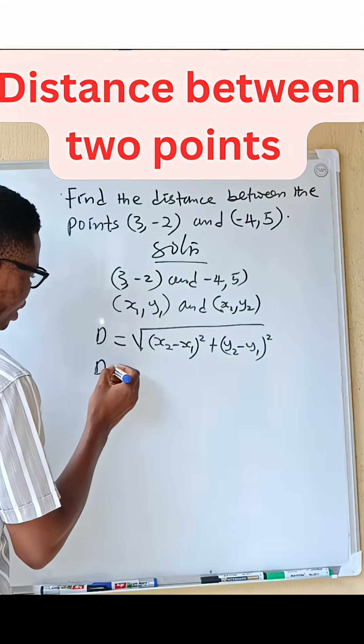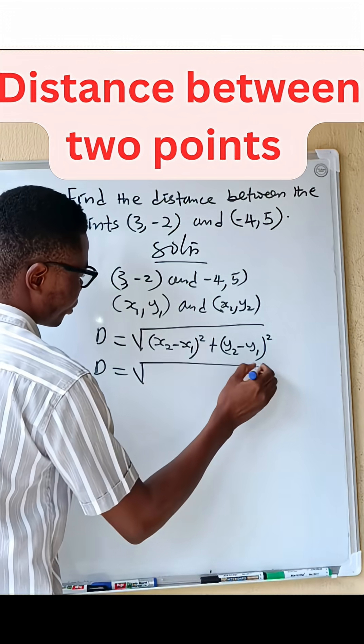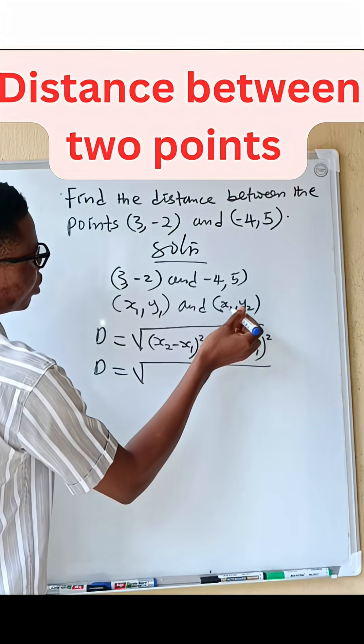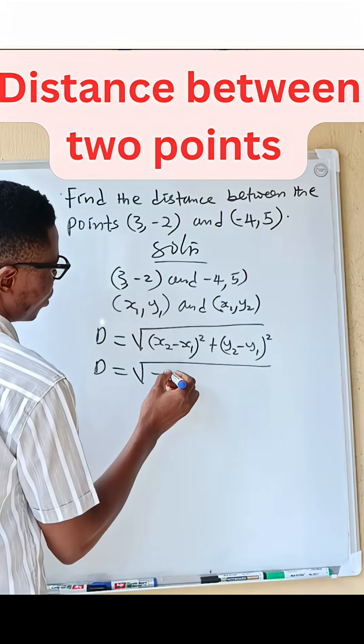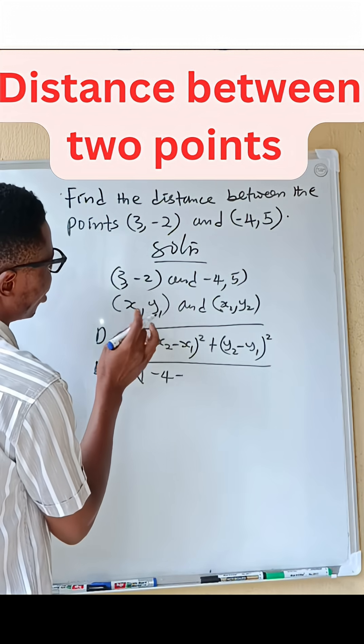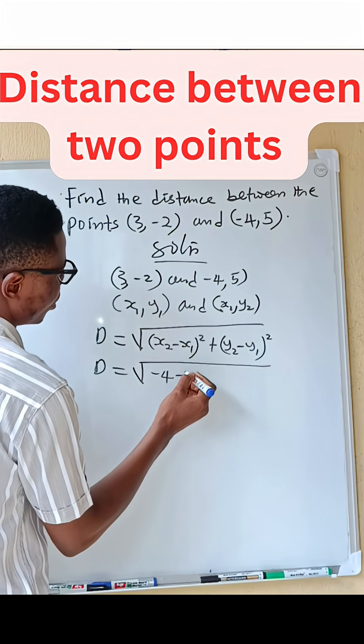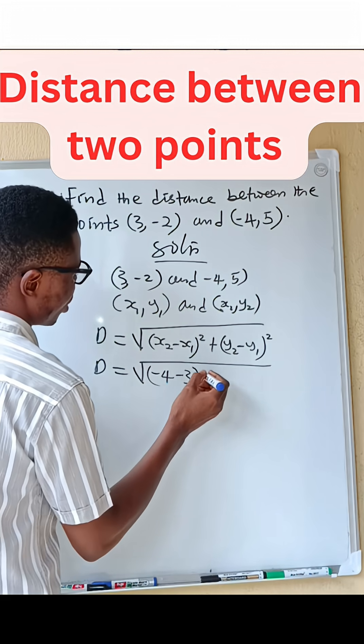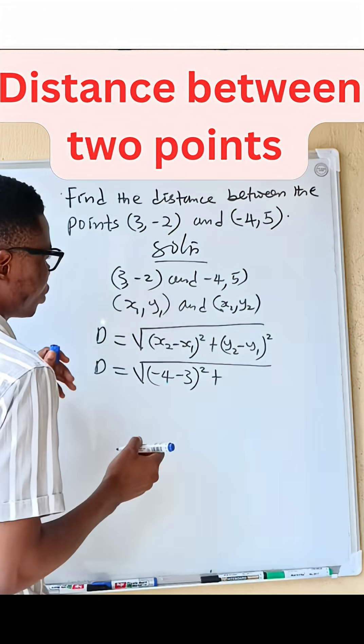So we are going to apply that here. We have root sum. So x2 is what? x2 is -4 minus, your x1 is what? 3.